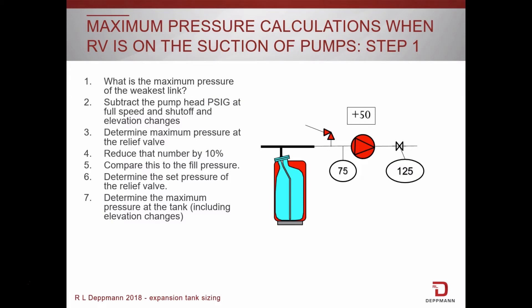Next, that relief valve will start to weep at 90% of its setting, so we want to give ourselves a 10% buffer. To do that, we need to subtract 10% from 75 psi. That gives us a maximum pressure at the relief valve of 67.5 pounds. We would then select a standard relief valve setting below 67.5 psi. It's best to stay with standard settings whenever possible, so maybe we use a 50 psi, 45 psi, or 40 psi setting. This will also be the maximum pressure at the expansion tank.